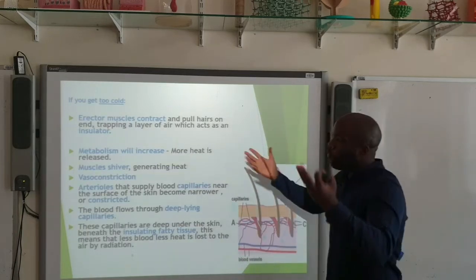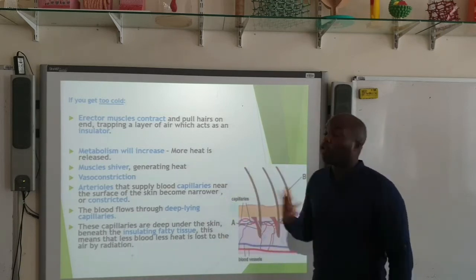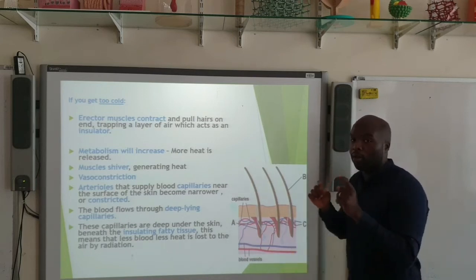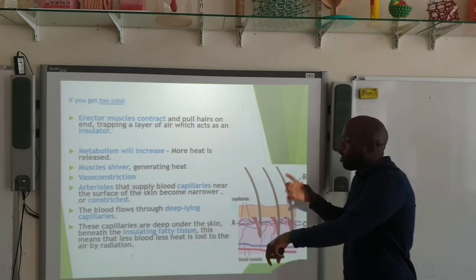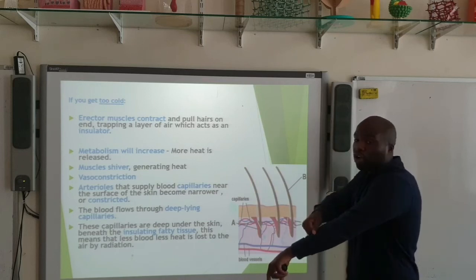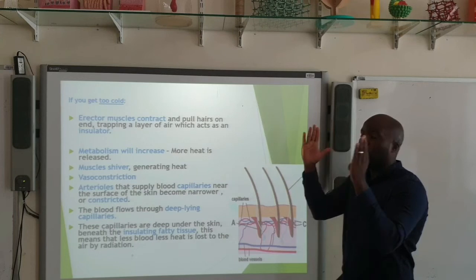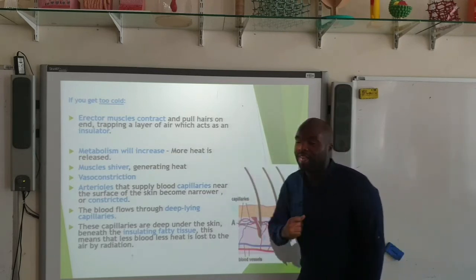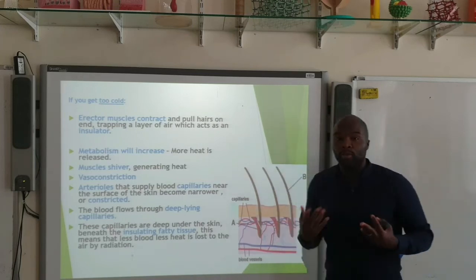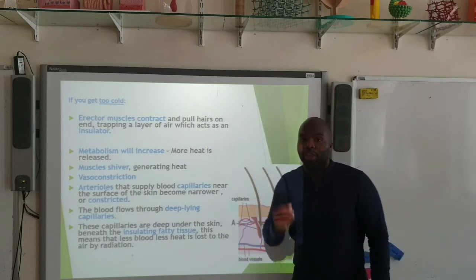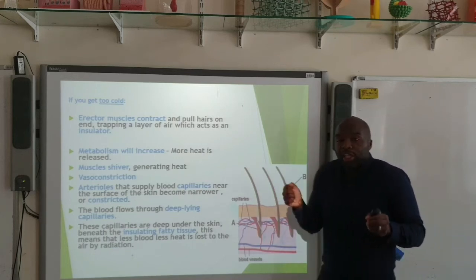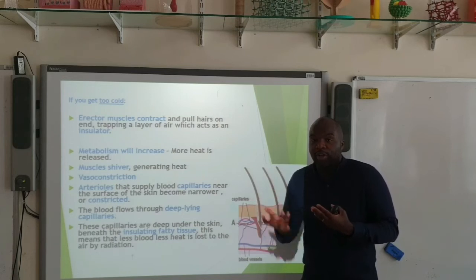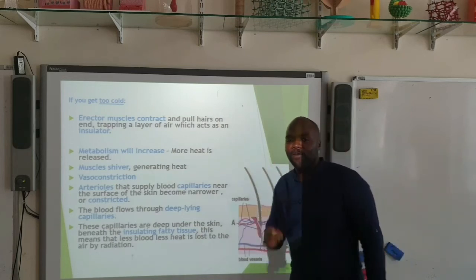Let's look at what happens if you get too cold — imagine you've walked into your favourite mall and it's too cold. The first thing that happens is erectile muscles contract. These muscles are attached to the hairs, and when they contract, they pull the hairs and make them stand on end. The hairs standing on end trap a layer of air, and this layer of air acts as an insulator. If you're cold, your metabolism will also increase — these metabolic reactions produce heat. As you know, if you get really cold you will start to shiver, generating heat through muscular contractions, which require energy from respiration, and respiration produces heat.